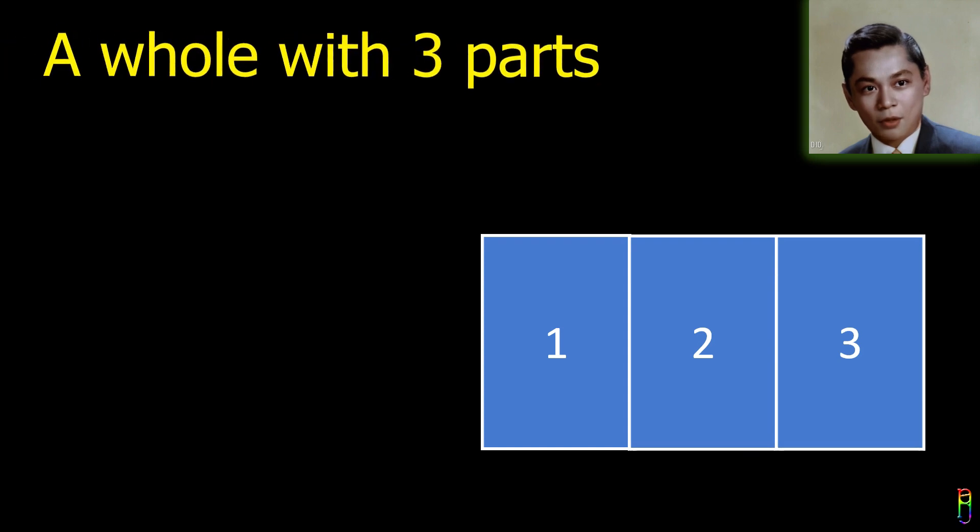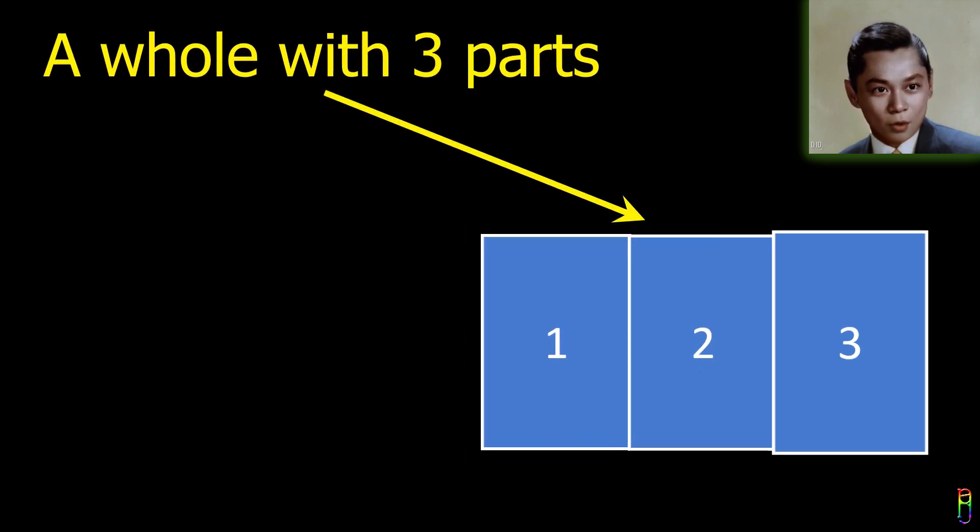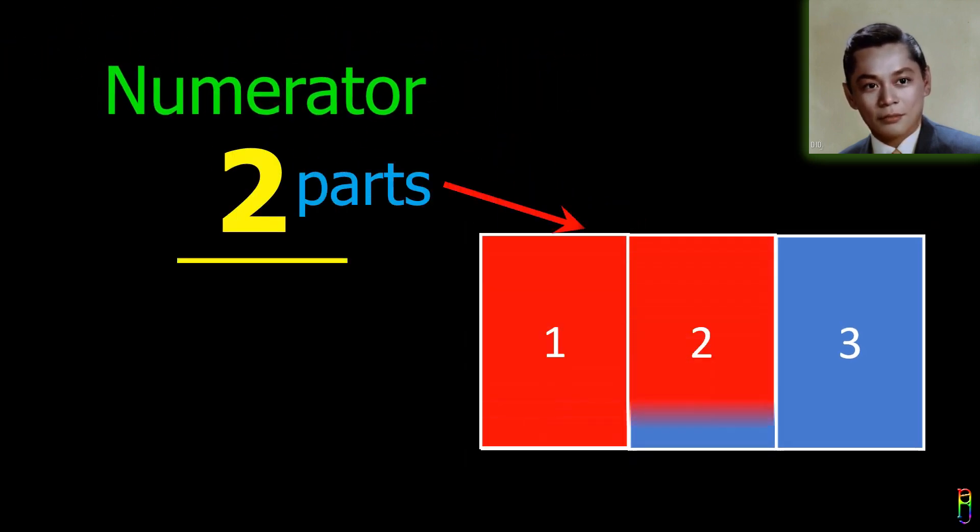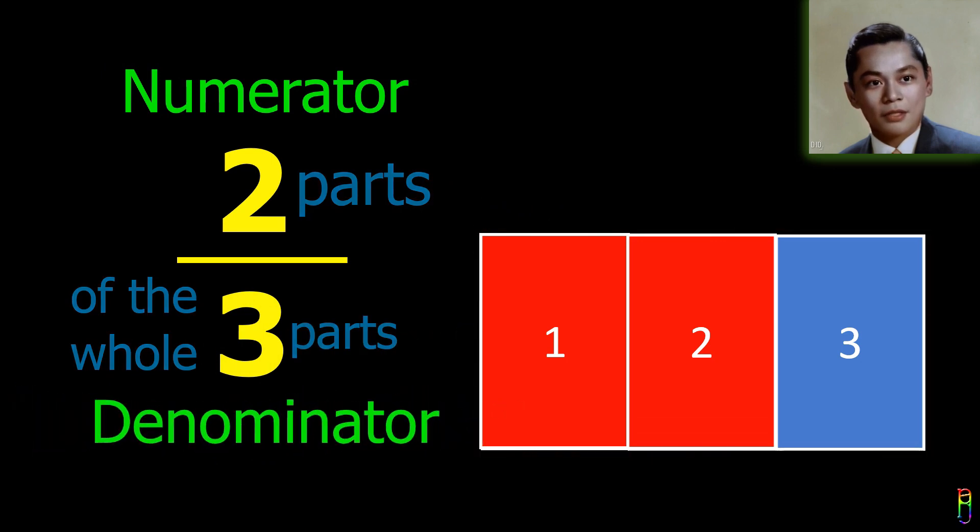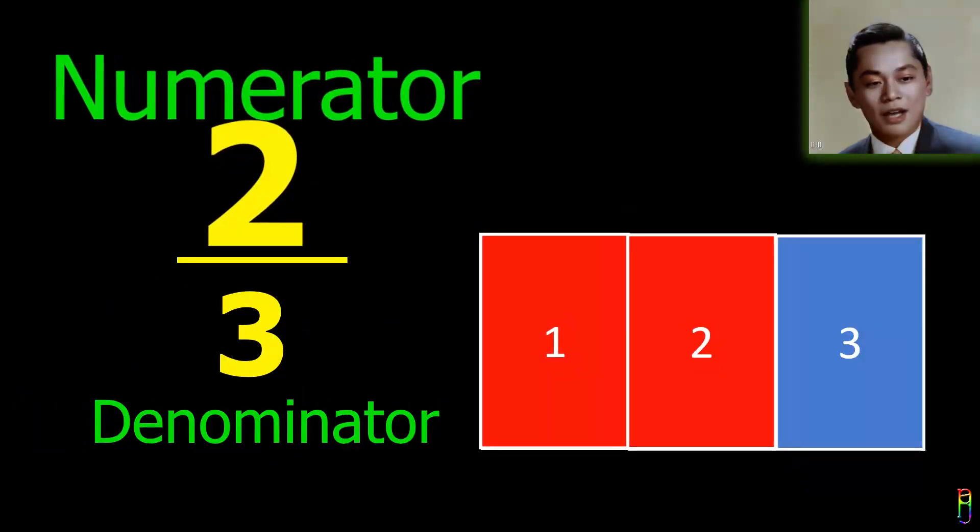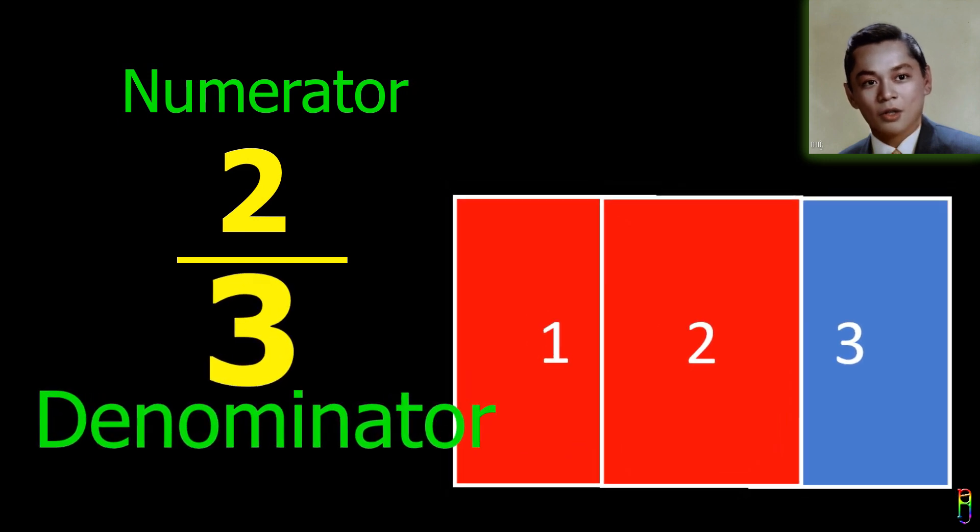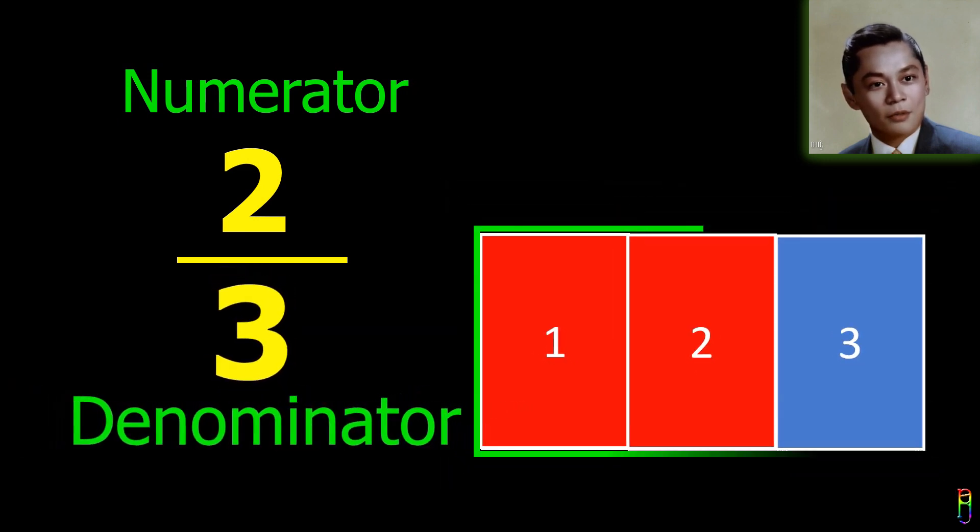Let's start with the basics. A fraction is a way of representing a part of a whole. It consists of two parts, the numerator and the denominator. The numerator represents the part, and the denominator represents the whole. For example, the fraction two-thirds represents two parts out of three.